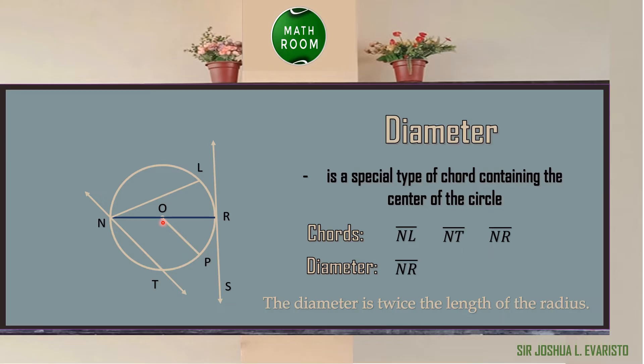Always remember that the diameter is twice the length of the radius. If the measurement of our radius is 5 cm, therefore the measurement of our diameter is 5 times 2, which is equal to 10 cm.